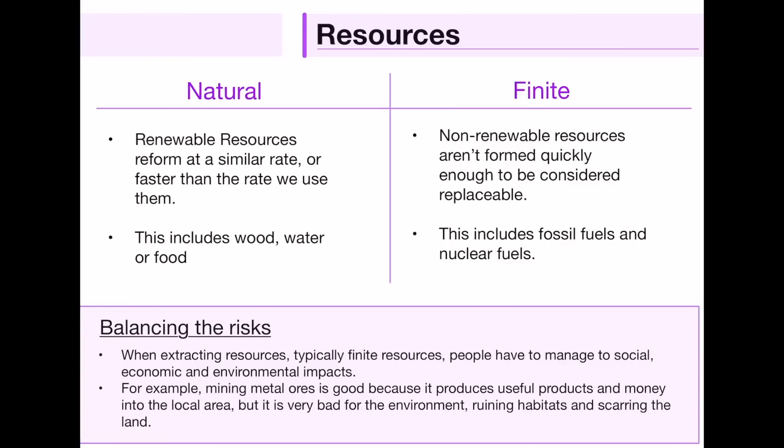First of all we have resources — a comparison between natural resources and finite resources. Natural resources are often renewable, reforming at a similar rate or faster than the rate that we use them. This typically includes things like wood, water, or food. Finite resources include non-renewable resources which aren't reformed quickly enough to be considered replaceable, such as fossil fuels and nuclear fuels.